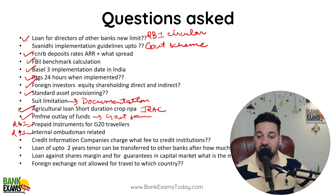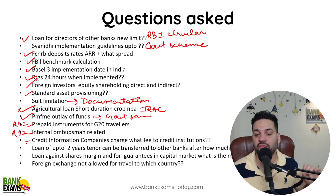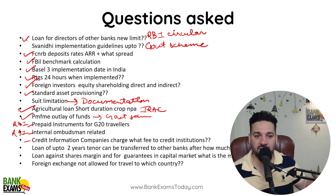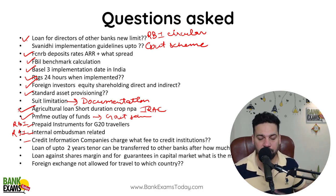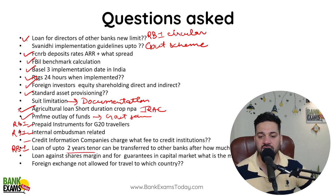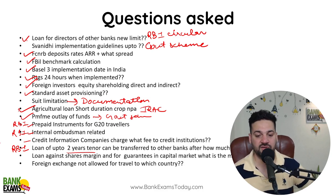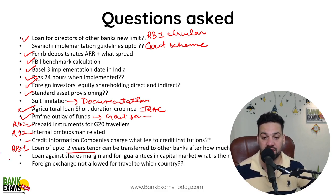The Internal Ombudsman scheme — this is again an RBI Circular. Credit information charges: how much fee is charged from a credit institution — this is also an RBI Circular. Loans of up to two years' tenure can be transferred to other banks after how much minimum operational time. Loan against shares: how much margin should we charge — again an RBI Circular. Foreign exchange not allowed for travel to which country — again an RBI Circular.